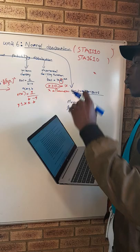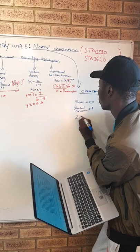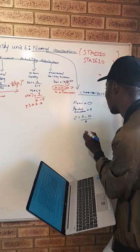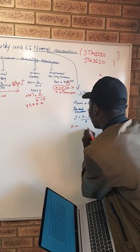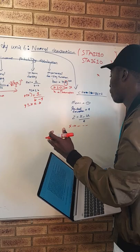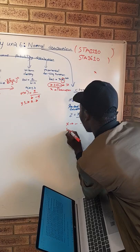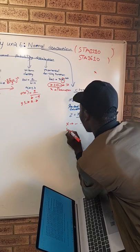This implies that all general normal distributions must be standardized. When they say must be standardized, it means you are going to use the formula: Z is equal to X minus the mean, divided by the standard deviation. Here X is your observed value, the mean is mu, and the denominator is the standard deviation sigma.